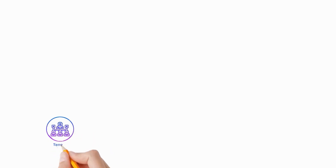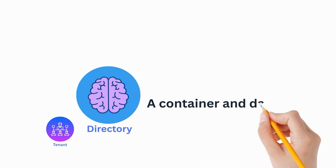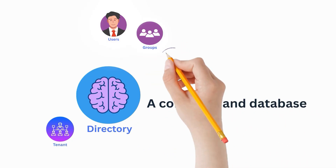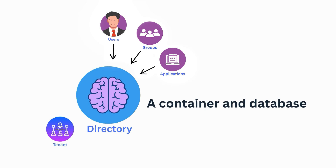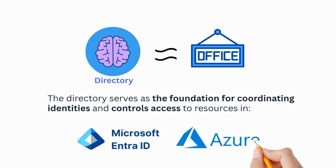At the core of every tenant is a directory — the brain of the system. A directory is the specific part of the tenant that acts as a container and database, organizing and managing all the objects, such as users, groups and applications. Just like the central management office of an apartment building, the directory serves as the foundation for coordinating identities and controlling access to resources in Microsoft Entra ID and Azure services.